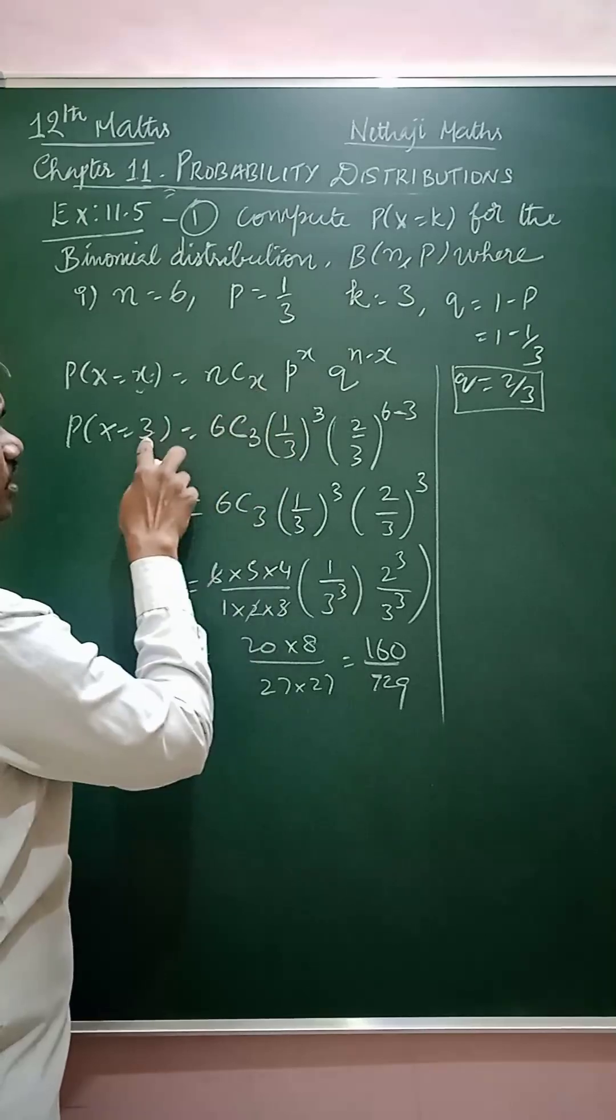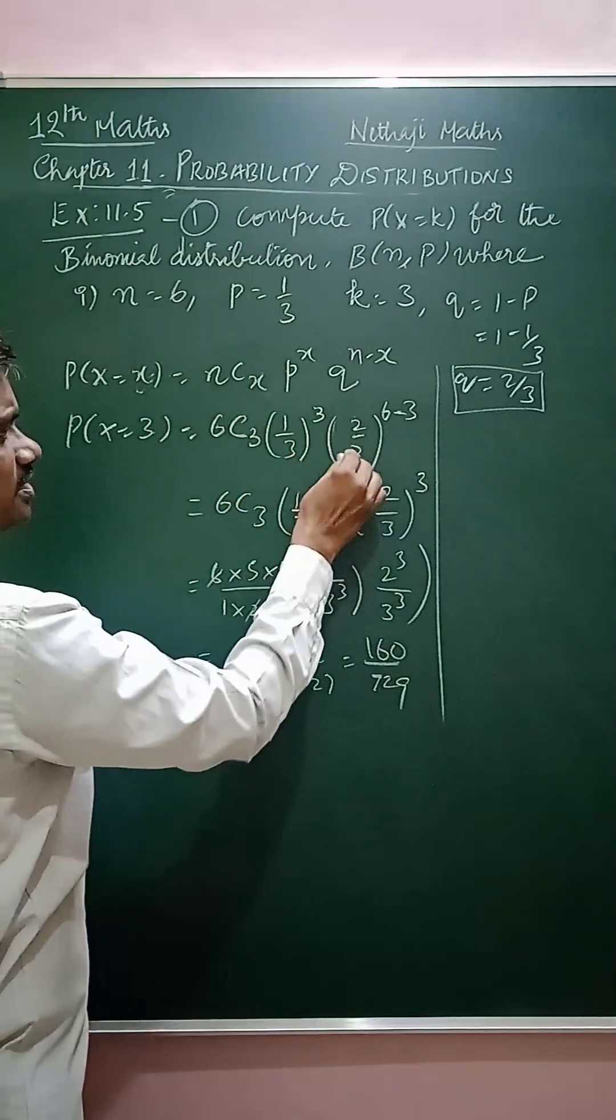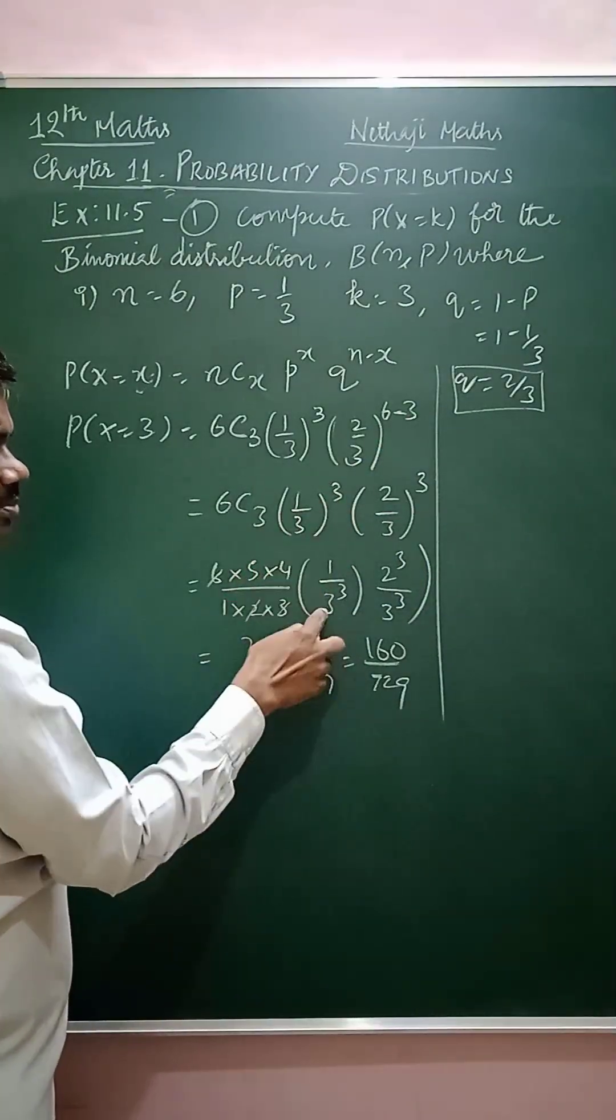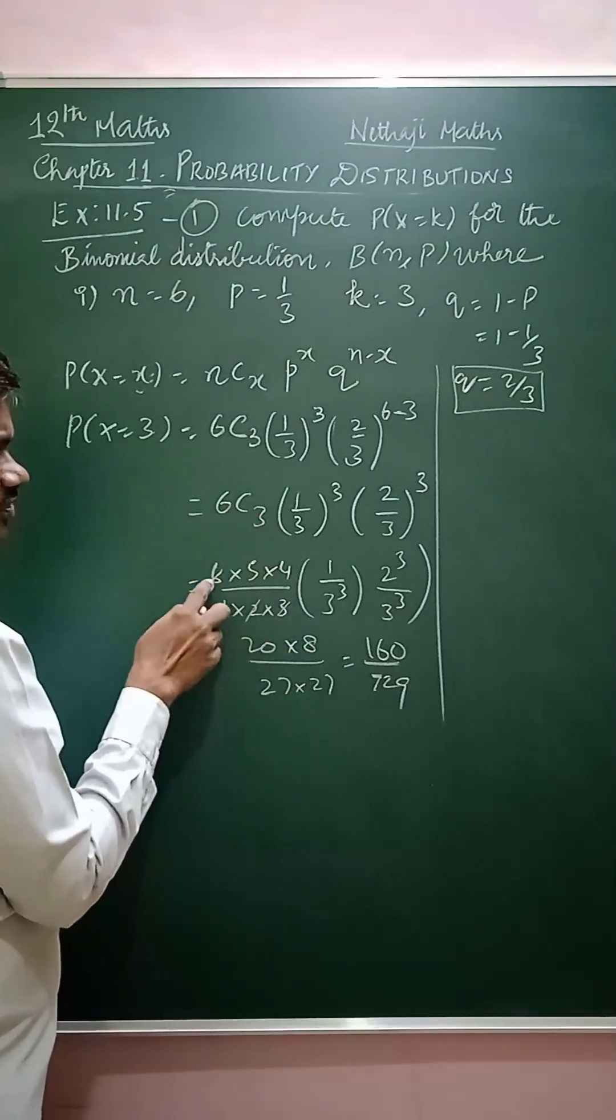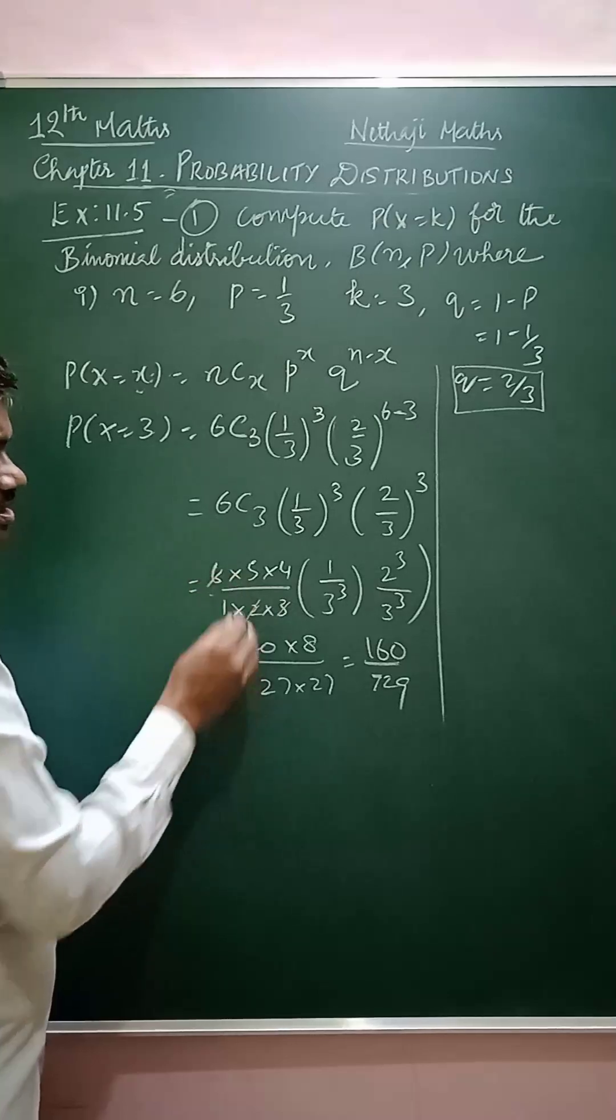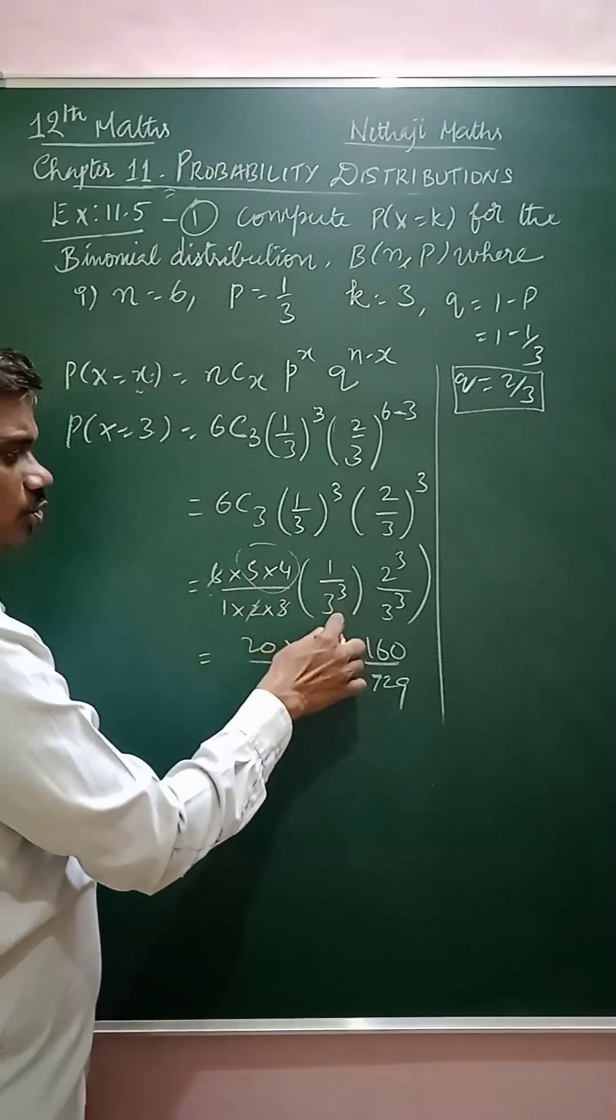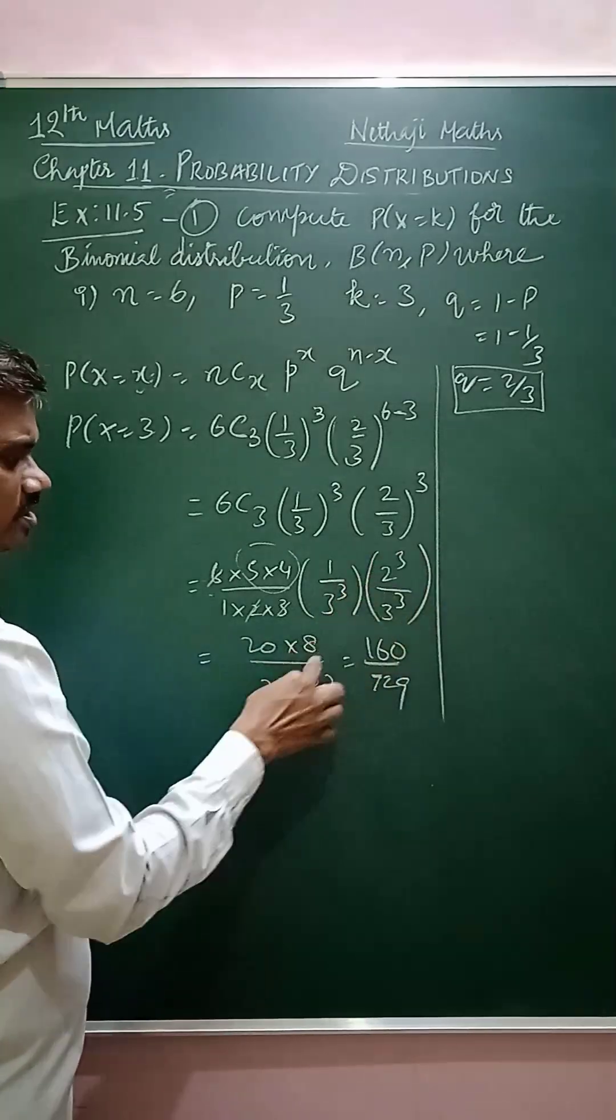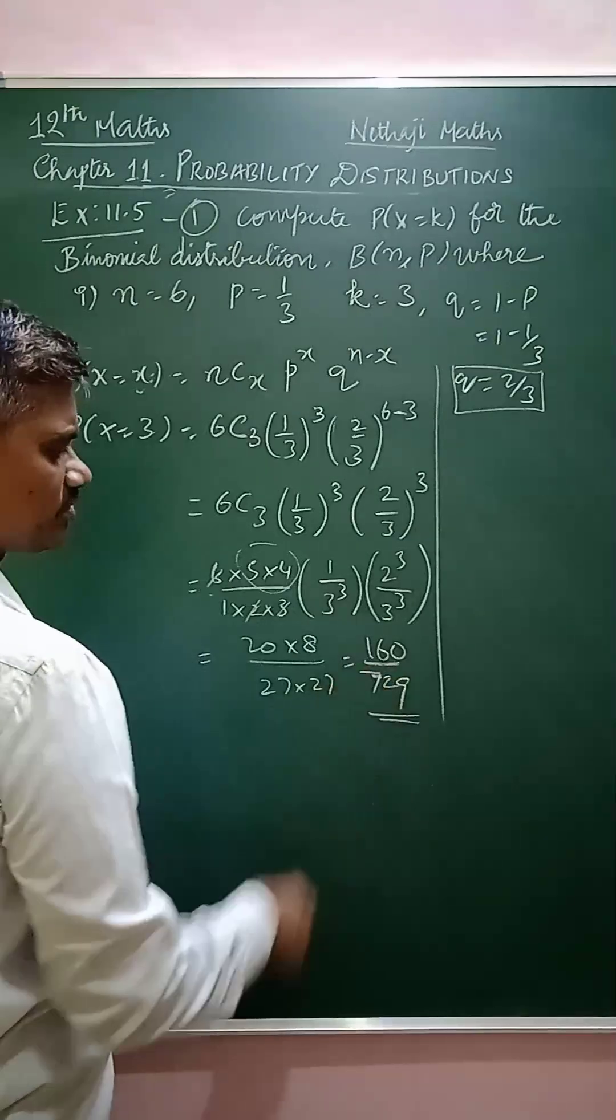Now substitute these values: 6C3 times (1/3)^3 times (2/3)^(6-3). This gives 6C3 times (1/3)^3 times (2/3)^3. Simplifying: (6×5×4)/(1×2×3) times (2^3)/(3^3) times 1/(3^3) equals (20×8)/729 equals 160/729.